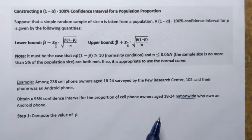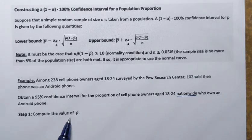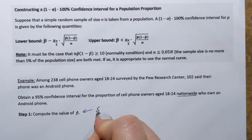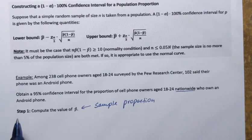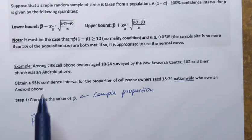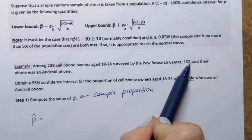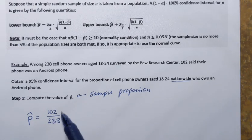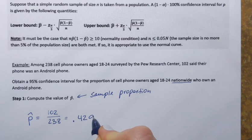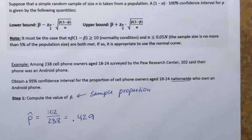The fact that it says nationwide means that we're trying to obtain an interval that contains the population proportion of Android phone owners. So we start by computing the value of p-hat — the sample proportion — because our interval is going to be based on the sample proportion. To find p-hat, we take the number of Android phone owners in the sample, which is 102, and divide by the sample size. That gives us 0.429, so about 43 percent of people in that sample own an Android phone.